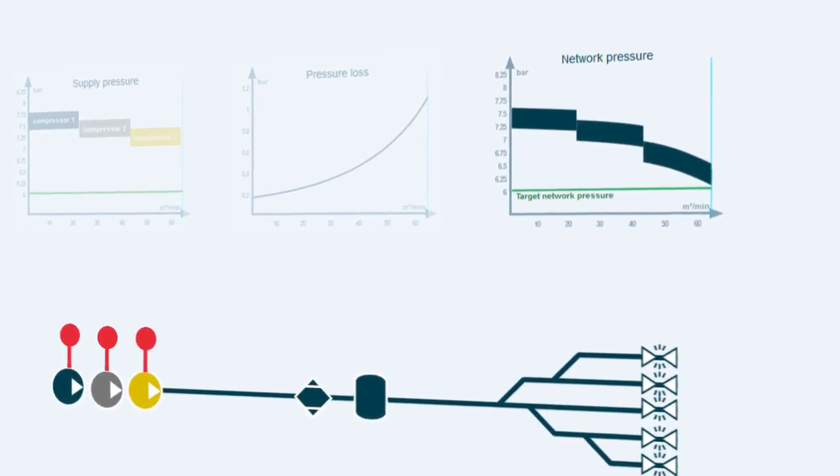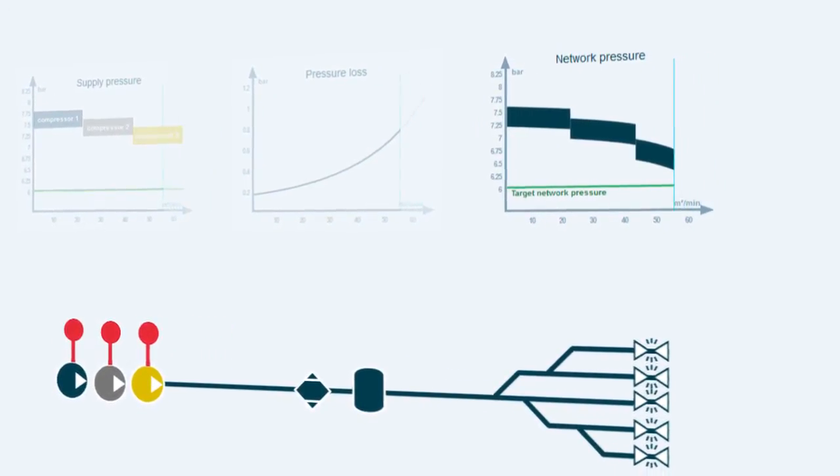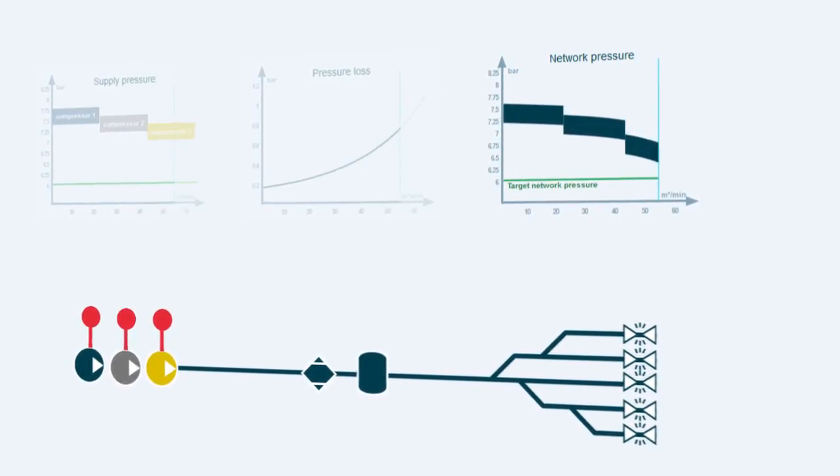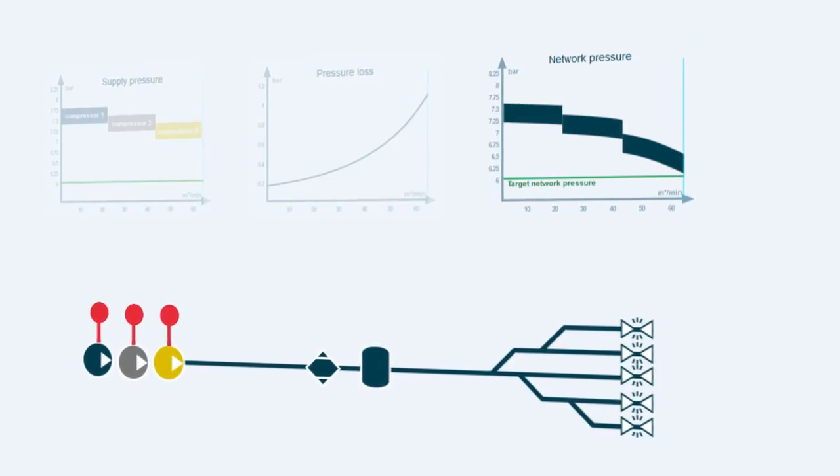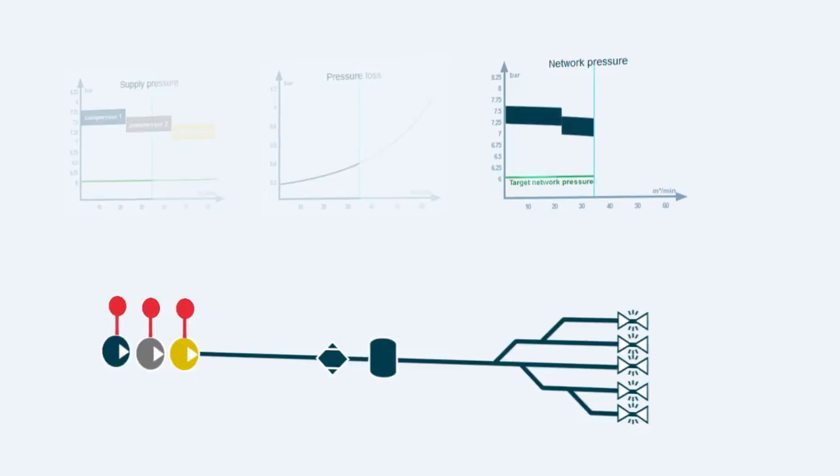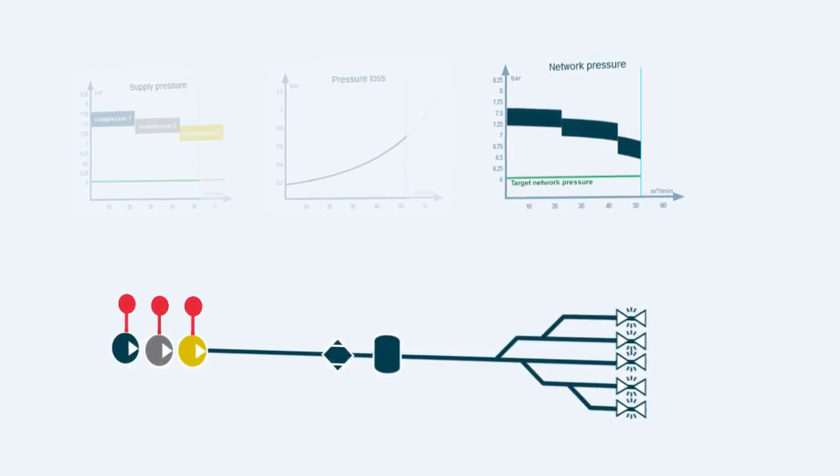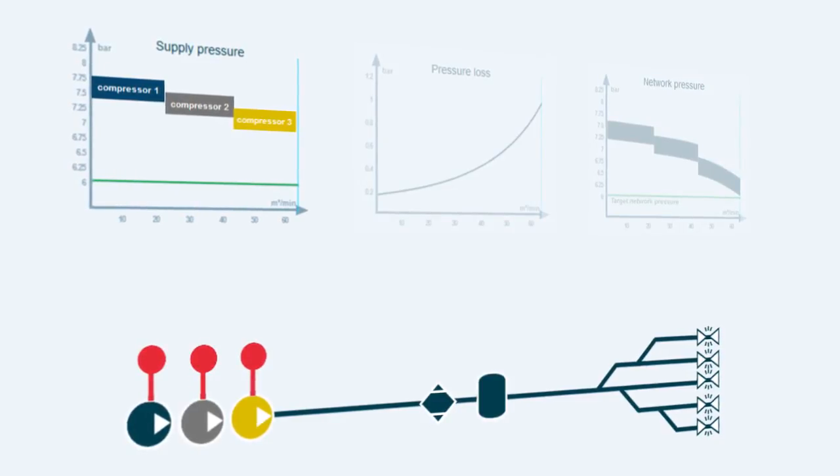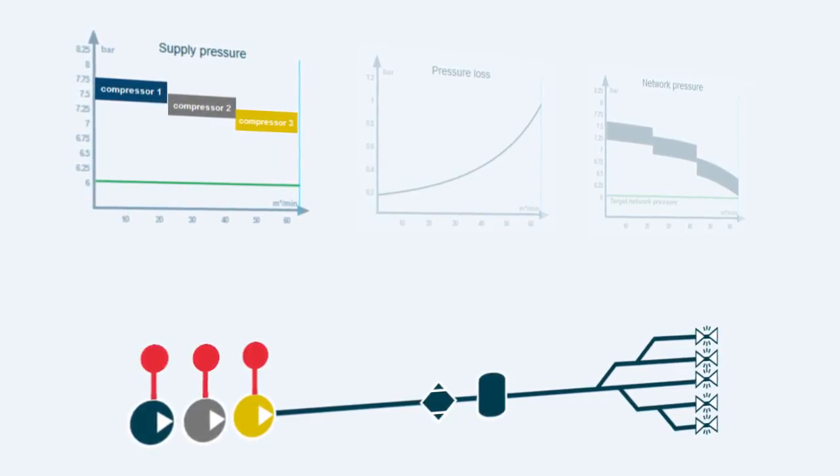The last graph shows the pressure level in the consumption point, the actual production. A compressed air system should be designed so that the system pressure maintains the minimum required pressure level in all situations. The green line in our example represents the minimum required pressure level. This diagram illustrates the compressor specific operation limit values.